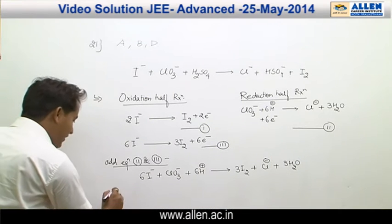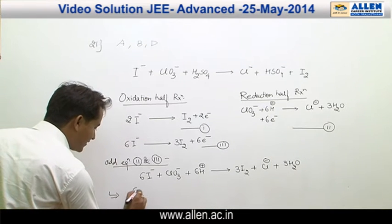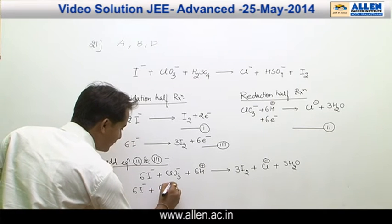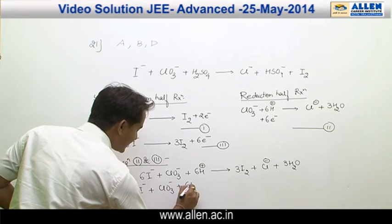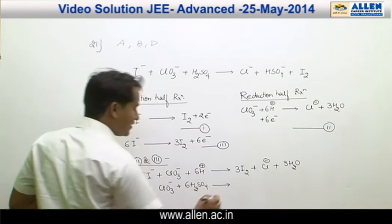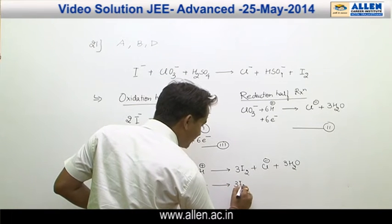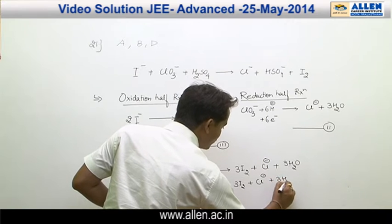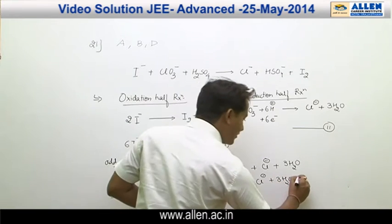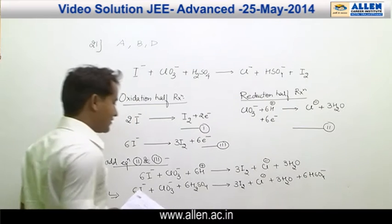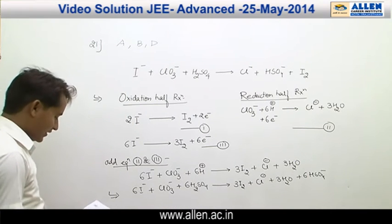Now, the complete balanced equation is 6 I⁻ plus ClO₃⁻ plus 6 H₂SO₄ gives 3 I₂ plus Cl⁻ plus 3 H₂O plus 6 HSO₄⁻.